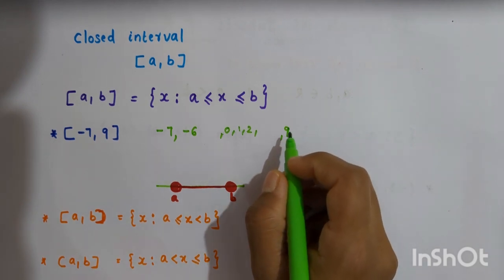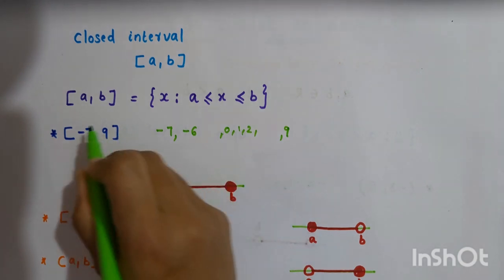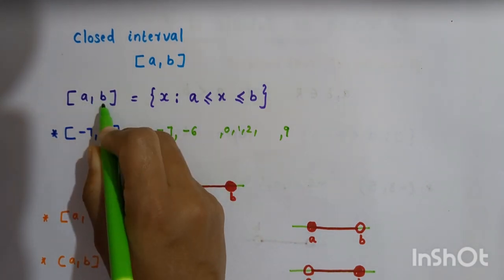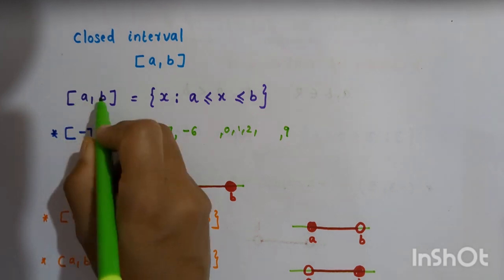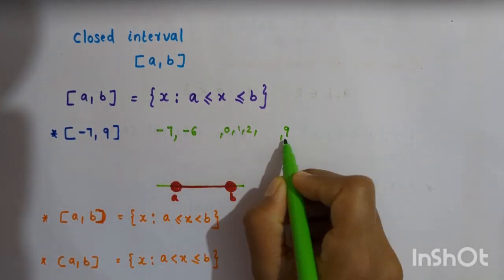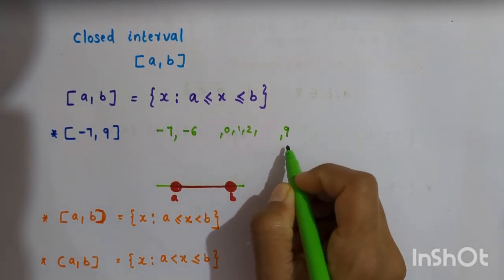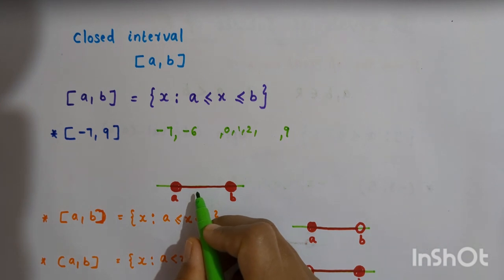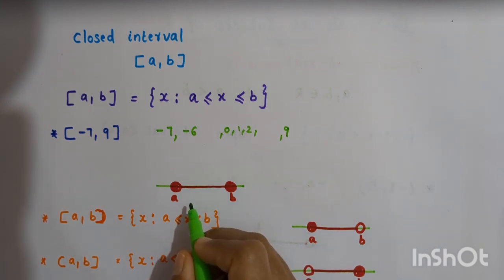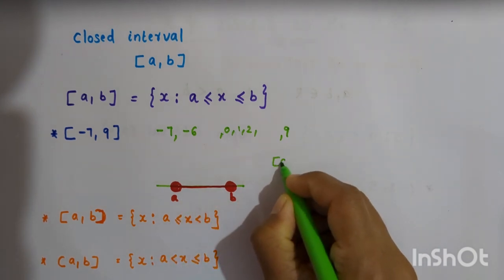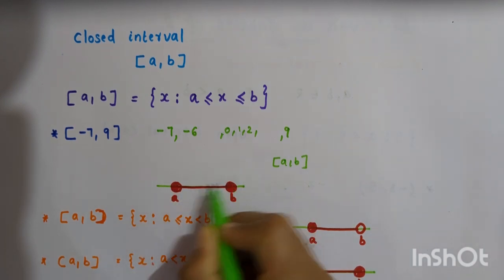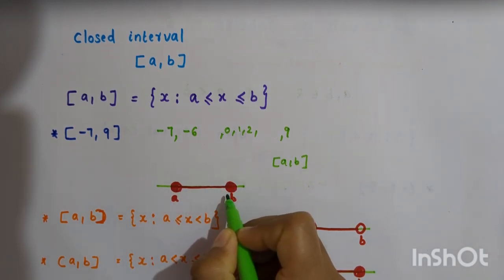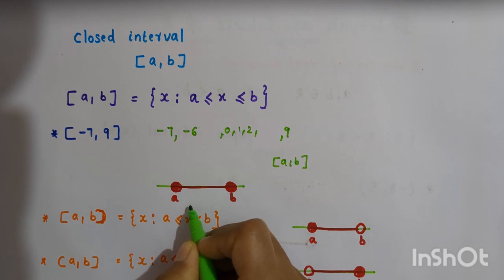In the open interval, the endpoints do not belong to the interval, but in the case of a closed interval, it contains the endpoints as well — we must consider the endpoints. On a real number line, we represent a closed interval [a, b] with two shaded circles joined by a line.